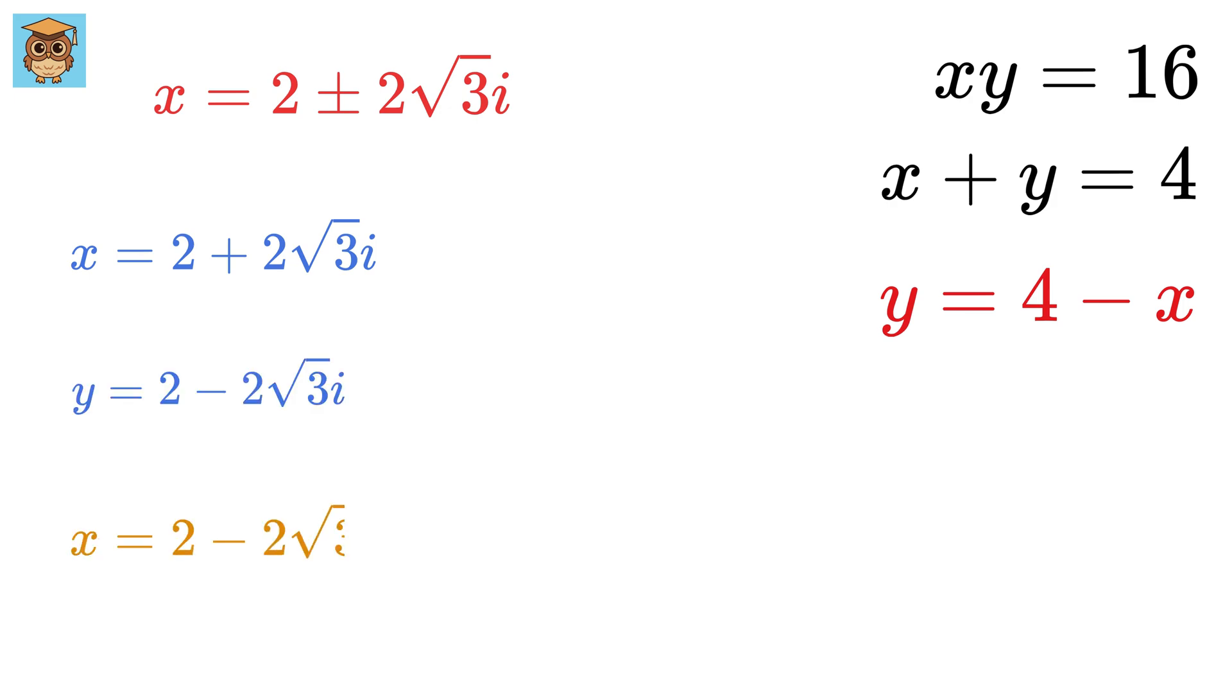And if we consider x equals 2 minus 2 root 3i, this gives y equals 4 minus this, which is 2 plus 2 root 3i. So, this is the pair of solutions we have for x and y.